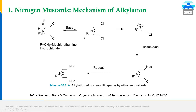Let's understand the mechanism of alkylation of nitrogen mustard. This particular diagram is taken from Wilson and Giswalt's Textbook of Organic Medicinal and Pharmaceutical Chemistry, page numbers 359 to 360. In the case of mechlorethamine, the nitrogen serves as a potent electrophilic center. The mechanism of alkylation involves the attack of a nucleophile over the electrophilic drug.